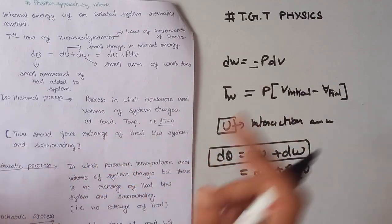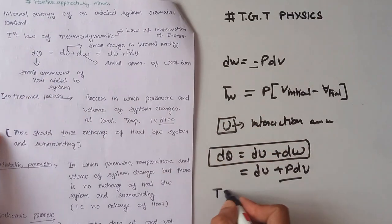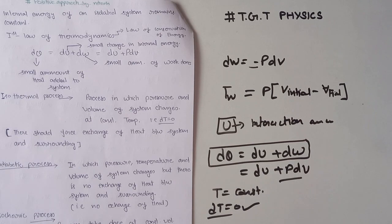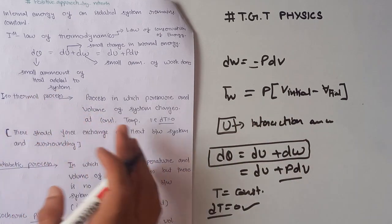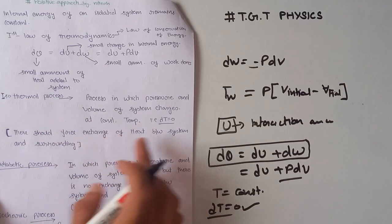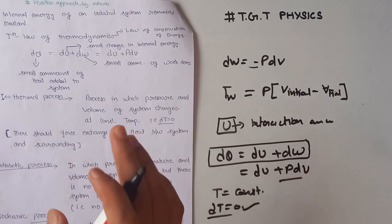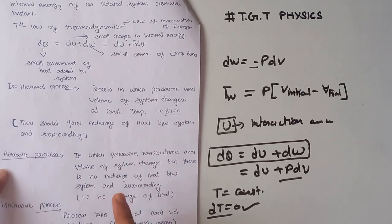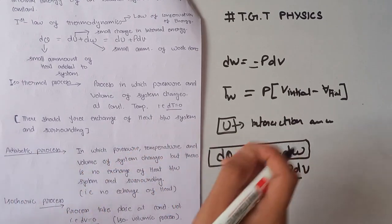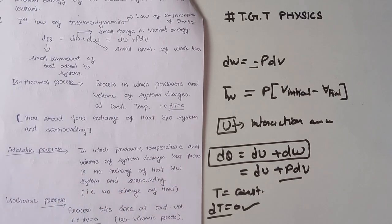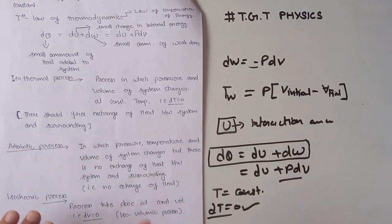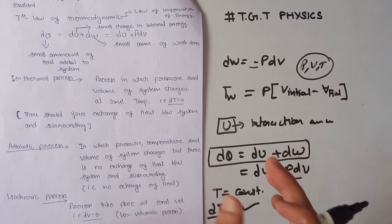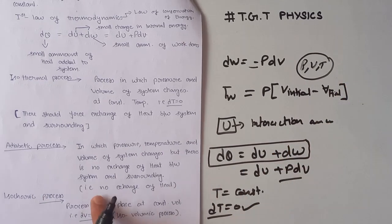What is an isothermal process? It is a process in which the pressure and volume of the system change at constant temperature, so dT = 0. In an isothermal process, there is free exchange of heat between the system and the surrounding. What is an adiabatic process? A process in which pressure, temperature, and volume of the system change but there is no exchange of heat between the system and the surrounding.